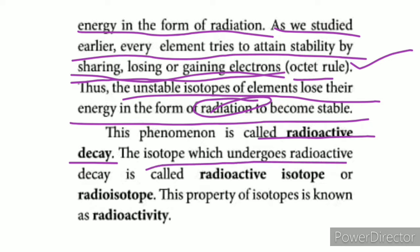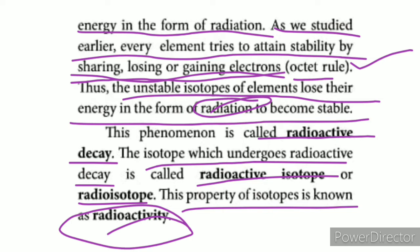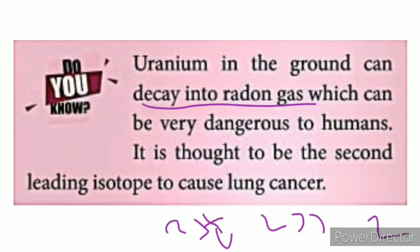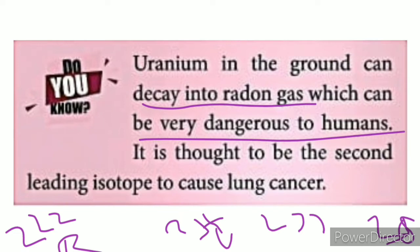When an isotope undergoes radioactive decay, it is called a radioactive isotope. The phenomenon is called radioactivity. For example, uranium undergoes radioactive decay and produces radon gas (Rn-222). Radon is dangerous to humans. In nuclear power reactors, this process is controlled.